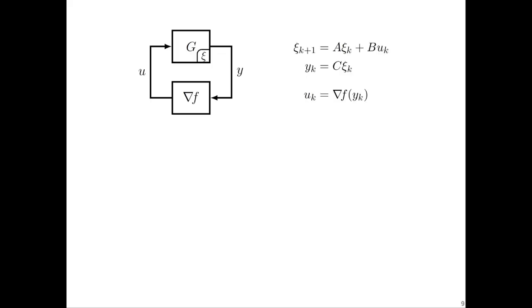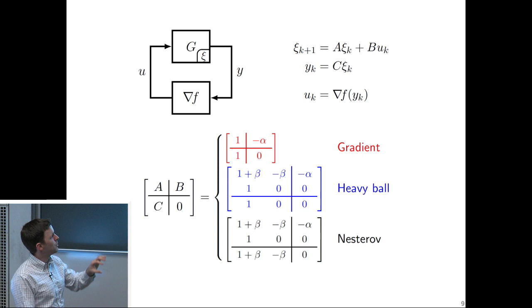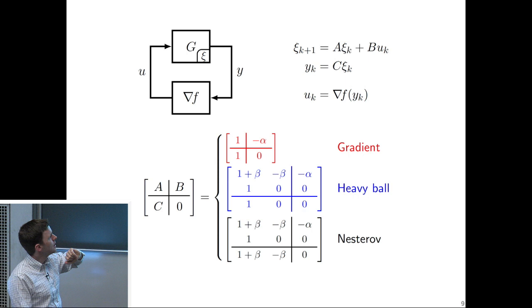So any optimization algorithm can be written as some linear system G — defined by matrices A, B, and C — in feedback with the gradient. Depending on whether you're analyzing the gradient method, heavy ball, Nesterov's method, or some other method, those just correspond to different choices of A, B, and C. So if you want to analyze a different algorithm, you just swap in the corresponding A, B, and C.